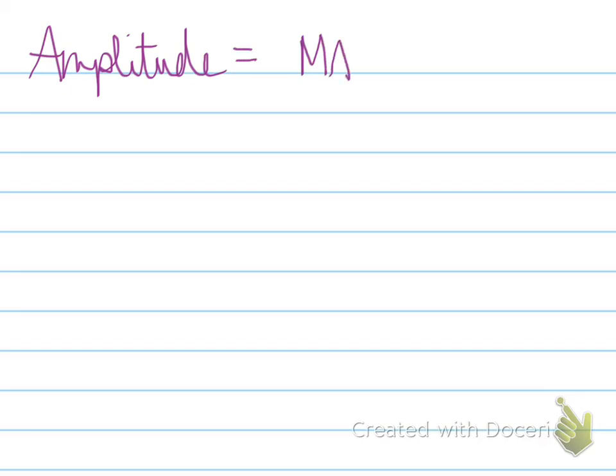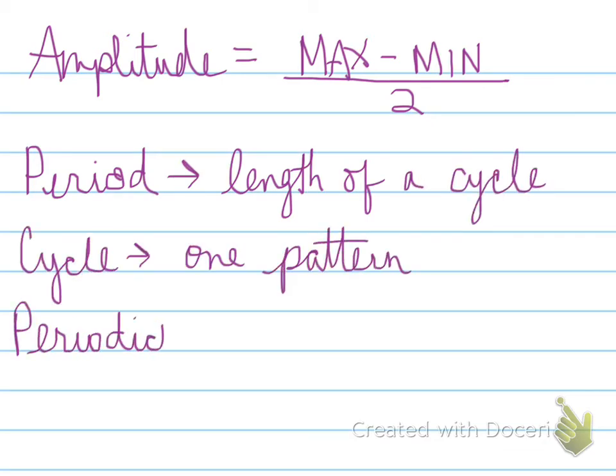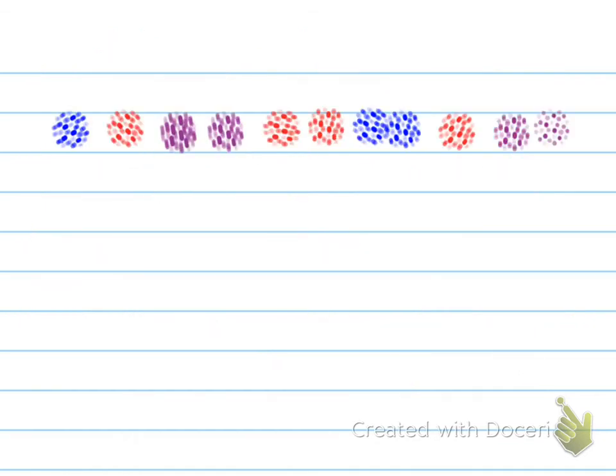Alright. So let's recap some definitions. Amplitude is equal to the max minus the min divided by two. Period is the length of a cycle. A cycle is one pattern. And a periodic means a pattern that repeats itself.